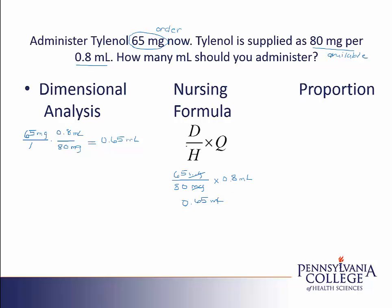My final approach is the proportion method. I'll start with what is ordered, the 65 milligrams, and I'll put it over x ml because I need to change it into milliliters. I'll put the equal sign because in a proportion I'm trying to make equal fractions, and I'll match the labels. So I have available to me 80 milligrams over 0.8 ml. In order to solve, I'll cross multiply. On my first diagonal, 65 times 0.8 is 52.